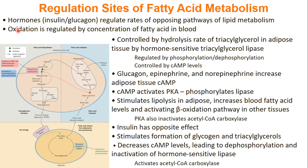The rate of beta-oxidation is regulated by the concentration of fatty acid in your blood. The amount of fatty acid in your blood is controlled by the hydrolysis rate of your TAGs in your adipose tissue by hormone-sensitive triacylglycerol lipase. This lipase, in turn, is regulated by phosphorylation and dephosphorylation.